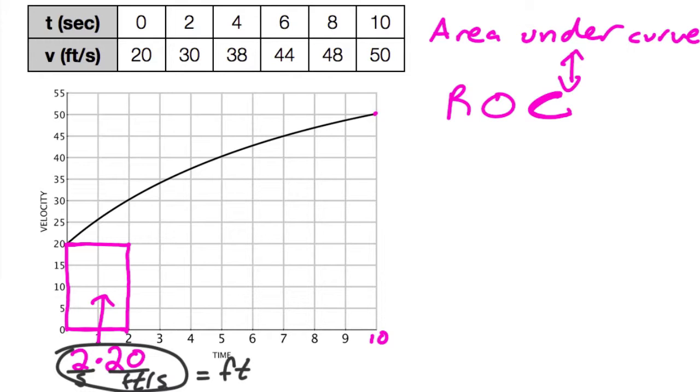Hmm, that's interesting. So this, 2 times 20 equals 40, corresponds to the—it's an approximation, of course—but it's an approximation of the distance the car has traveled in those first two seconds.